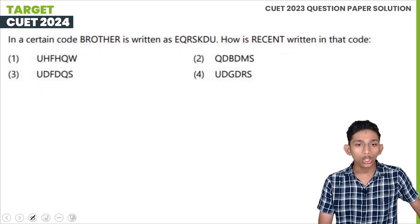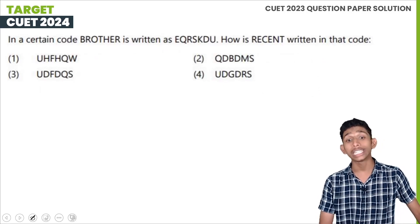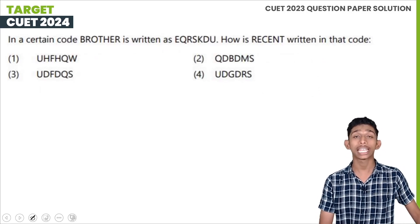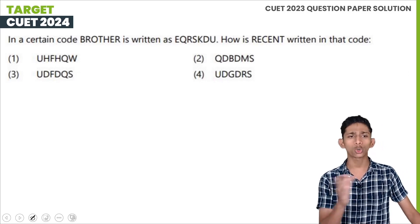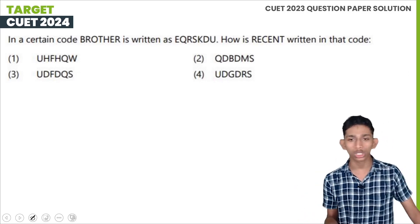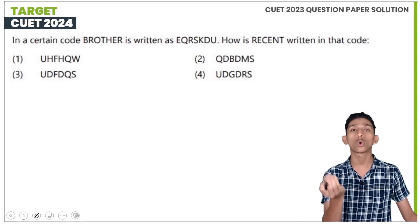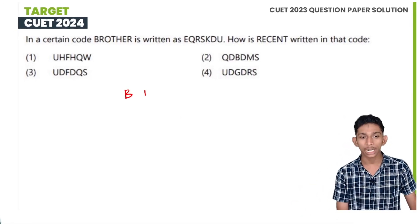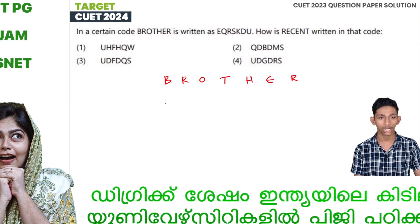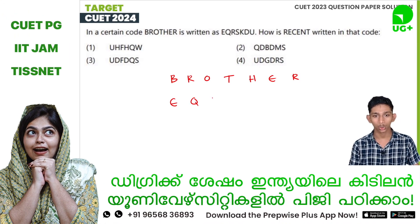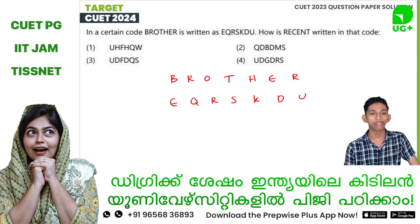The next question: in a certain code, 'brother' is written as E-Q-R-S-K-D-U. How is 'recent' written in that code? In this code language, you can use the code pattern established for 'brother' to find the code for 'recent'.